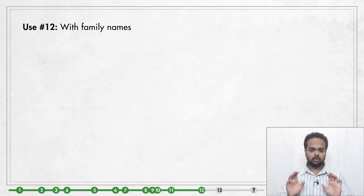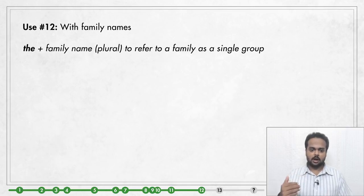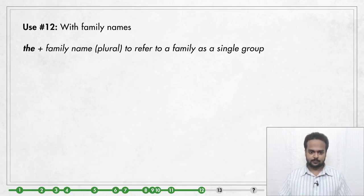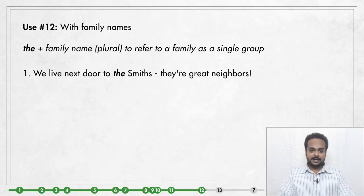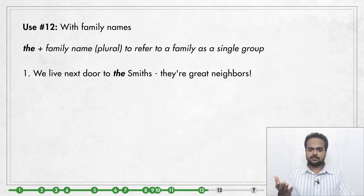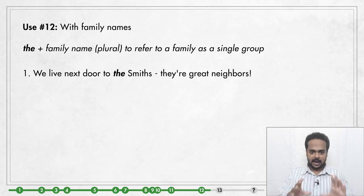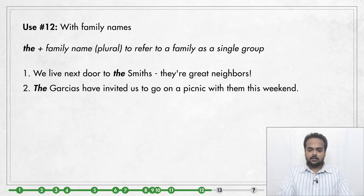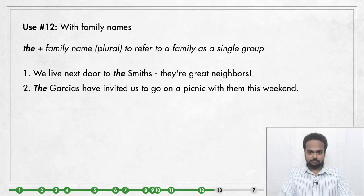Use number 12: using 'the' with family names. We don't use 'the' with names of individual people, but here's an exception — we use 'the' plus a family name in the plural form to refer to the family as a single group. For example: 'We live next door to the Smiths — they're great neighbors.' This means the family name is Smith and we refer to the whole family. Another example: 'The Garcias have invited us to go on a picnic with them this weekend' — the family name is Garcia, made plural as 'the Garcias.'